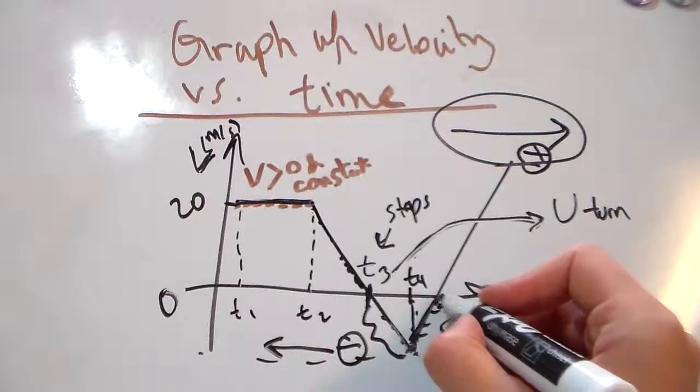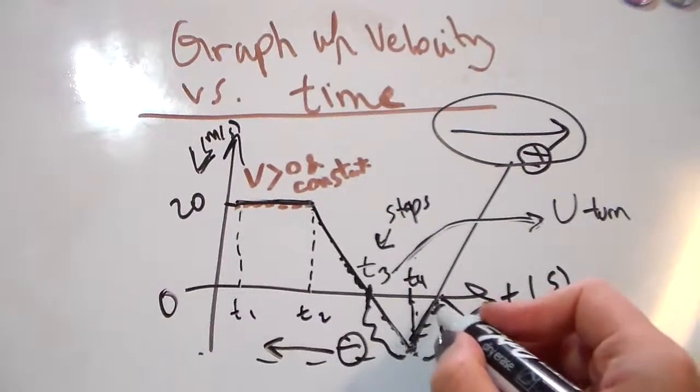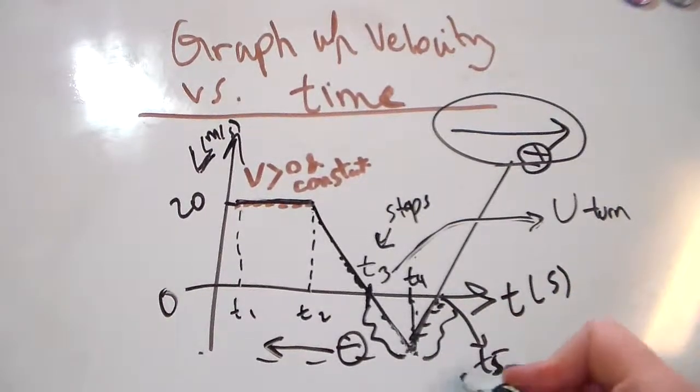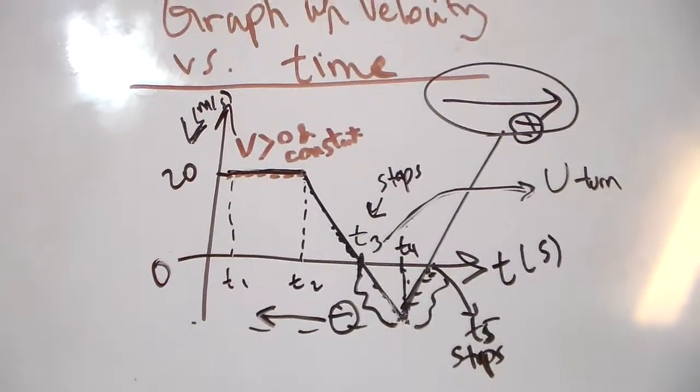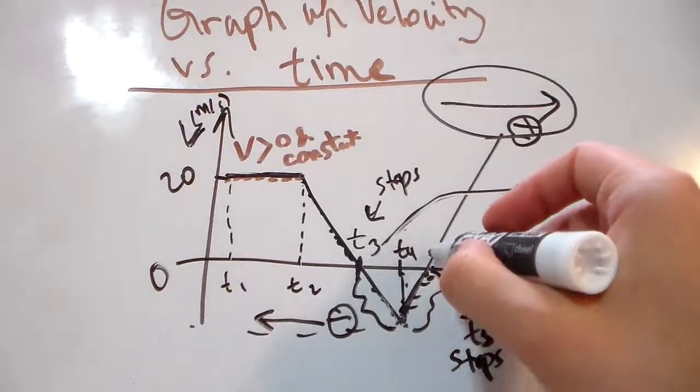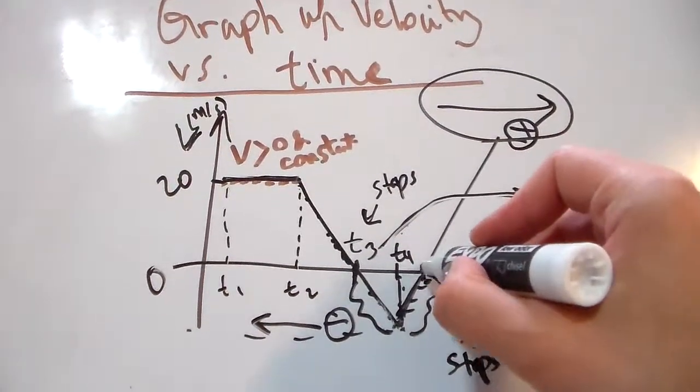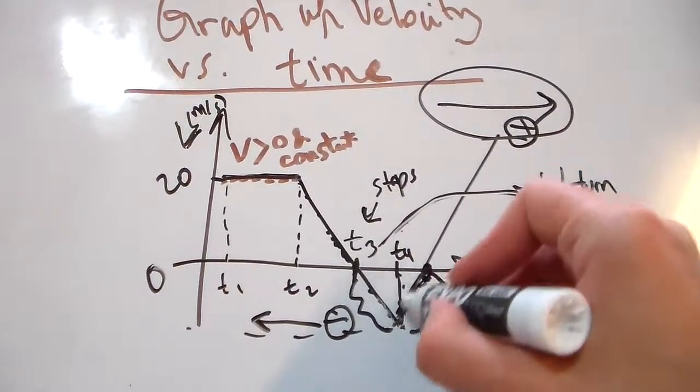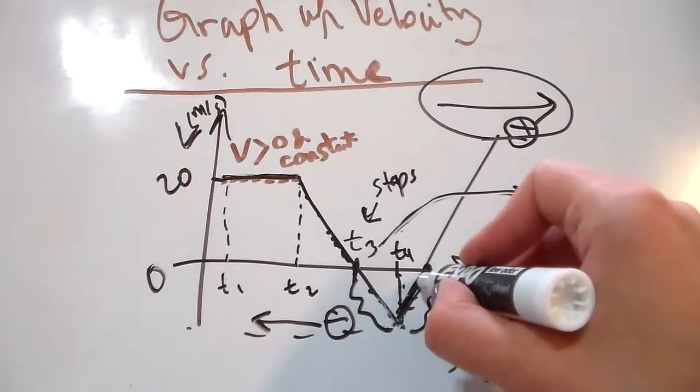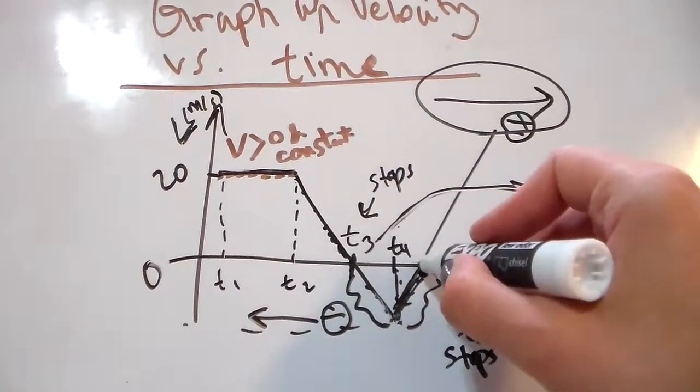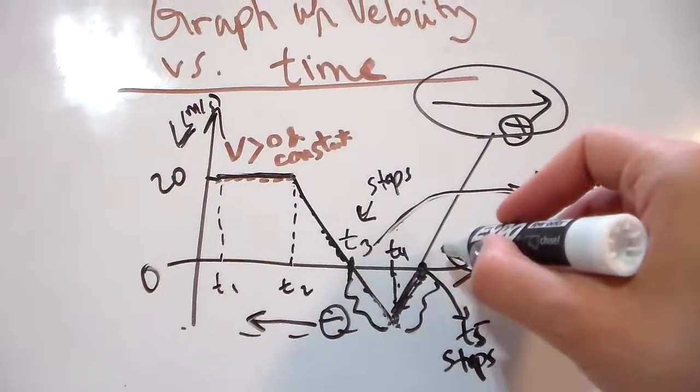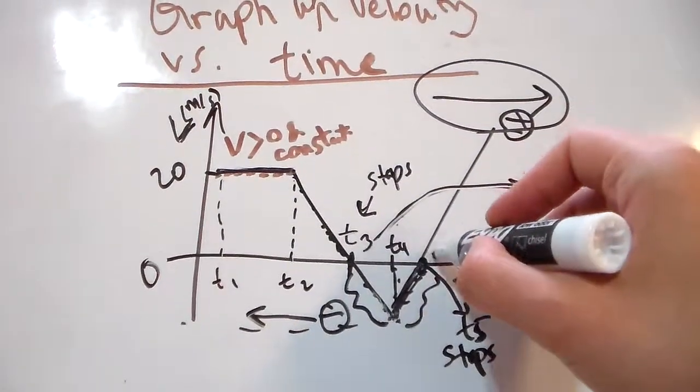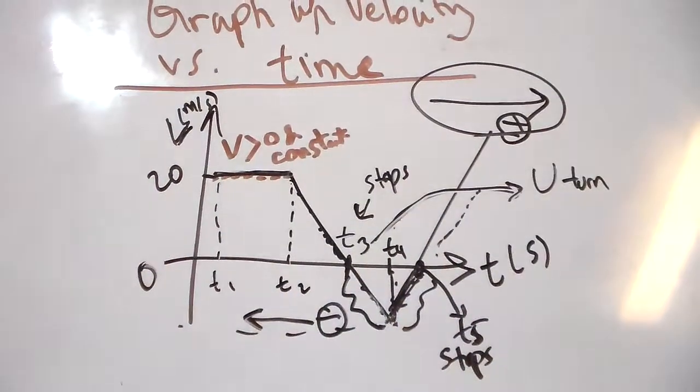At T5, we're going to stop momentarily again. We make another U-turn because we were driving on I-10 west, then we make a U-turn and go towards I-10 east, increasing our velocity as we go.